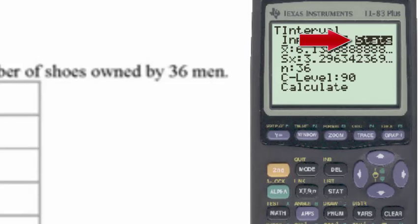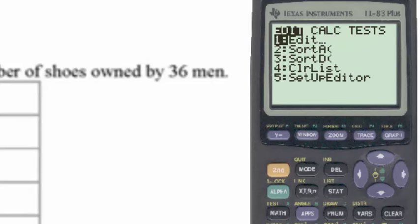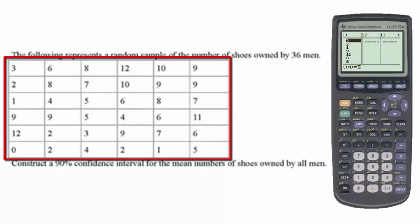In this particular case, we'll be putting the data into a list on our calculator. I'll go to the STAT ENTER key, and I put the 36 pieces of data all into list 1. Notice that in the original data, there were six columns of data, but all of the six columns go into one column, list 1.